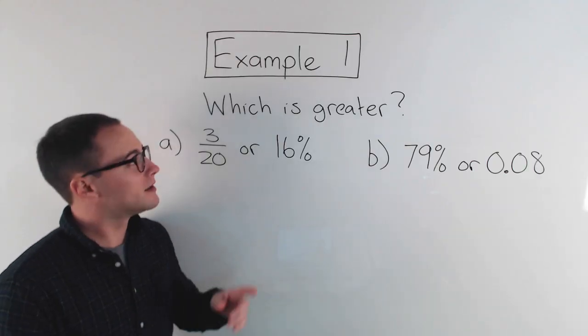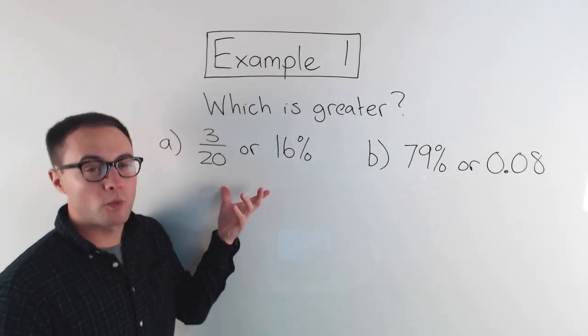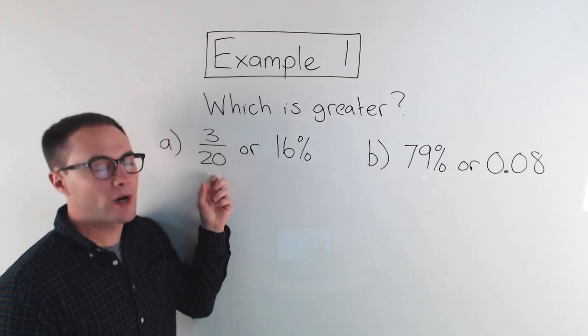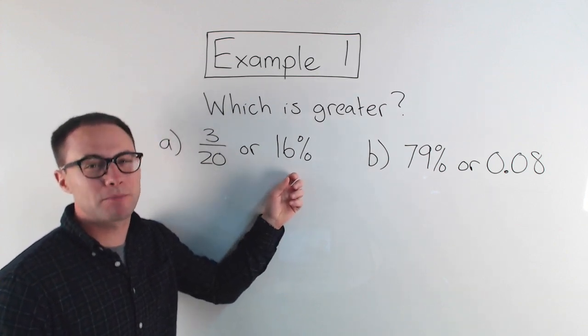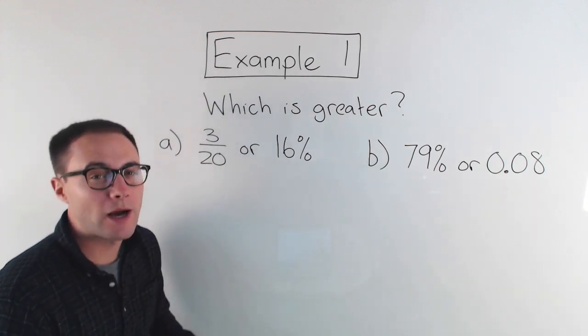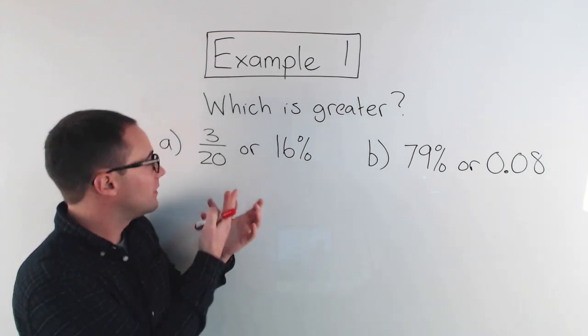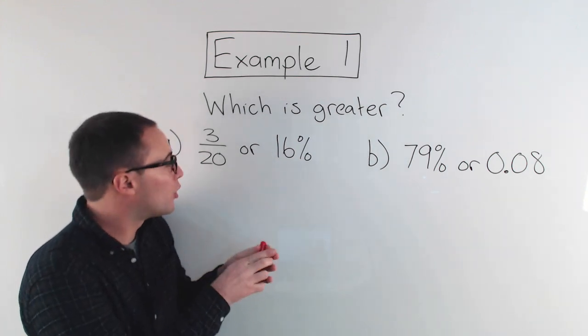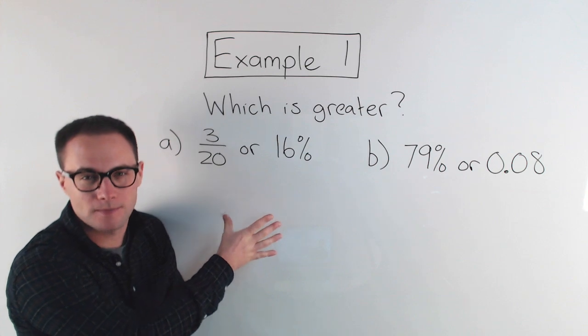So with that in mind, let's get to our first example. Example one: which is greater? We've got three-twentieths compared to 16%. We're comparing a fraction with a percent. The main rule: you've got to make them both either fractions or both percents.